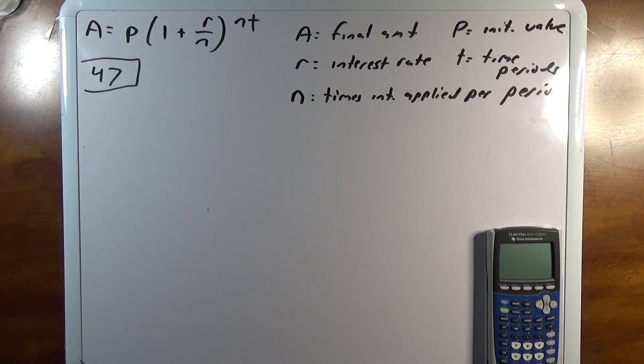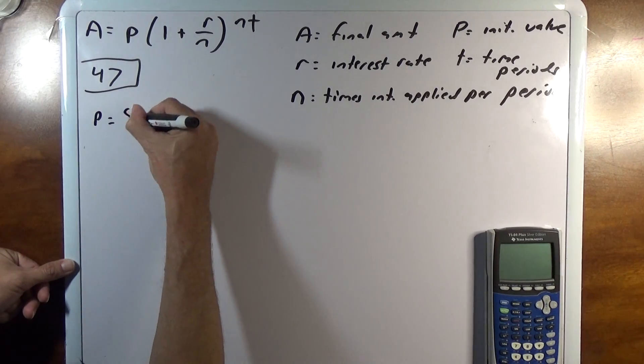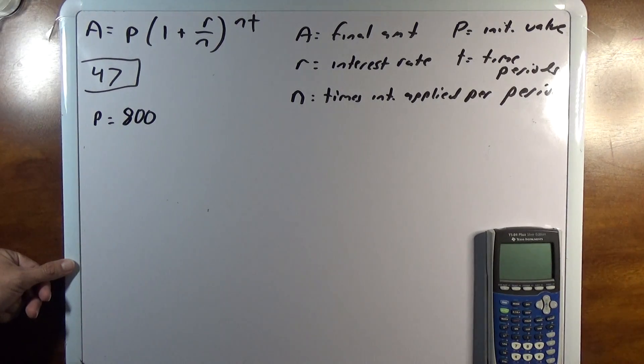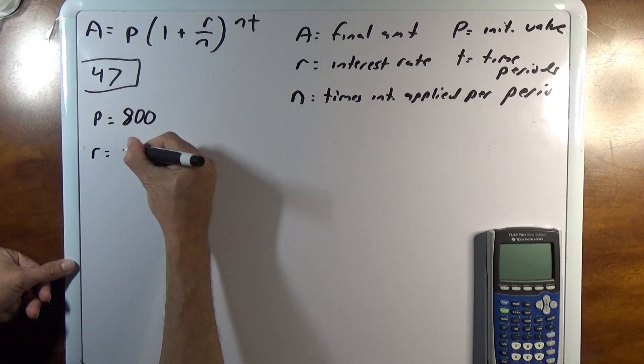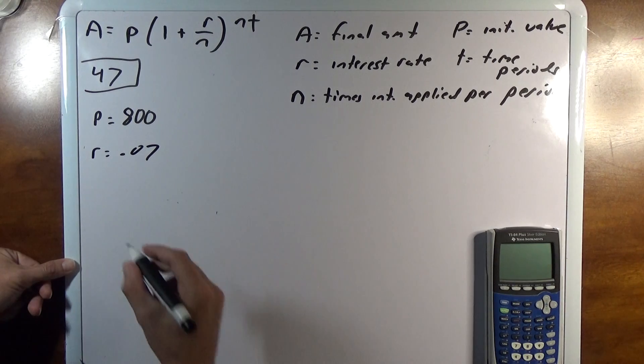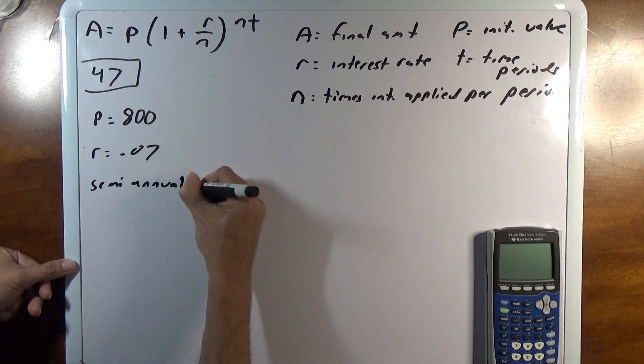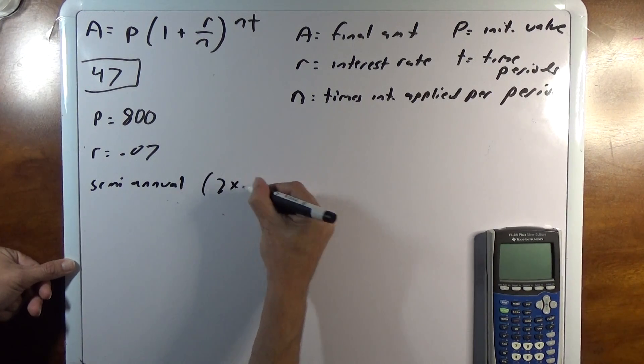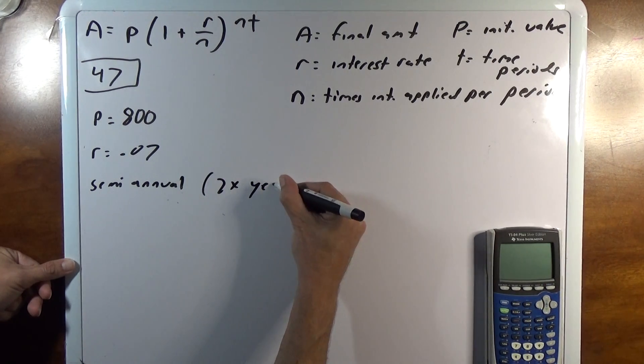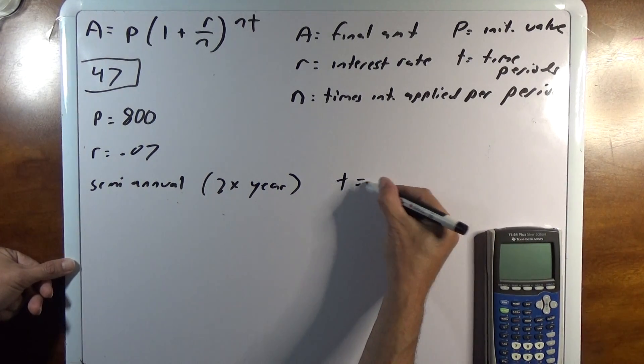So the question reads, find the balance in the account. It lists what our values are. The principal is 800. The interest rate is 7%, so that's 0.07. It's semi-annual, which is two times per year. And we want 12 years, so T is 12 years.